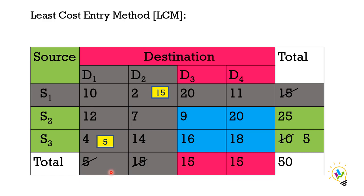Now how many values are there? Four values are available. Among these four values, which is the least one? 9 is least. So for 9, how many can be allocated? 15 can be allocated because S2 can give 25 units and D3 can receive only 15. So I am allocating only 15 units.